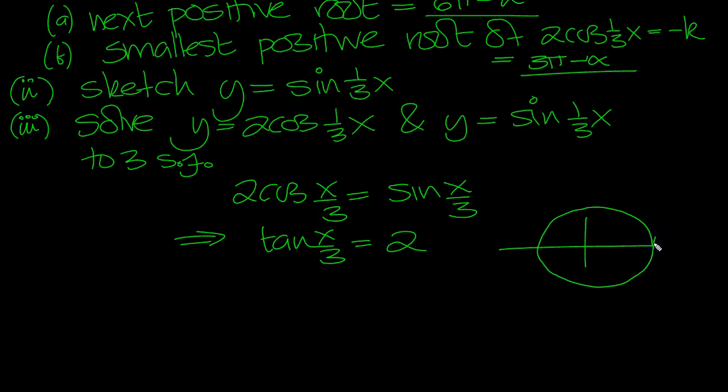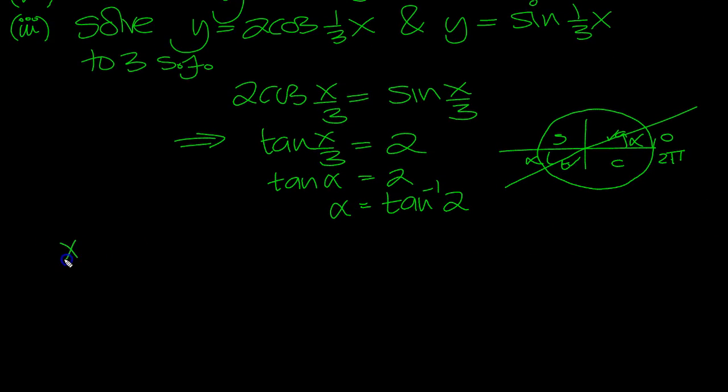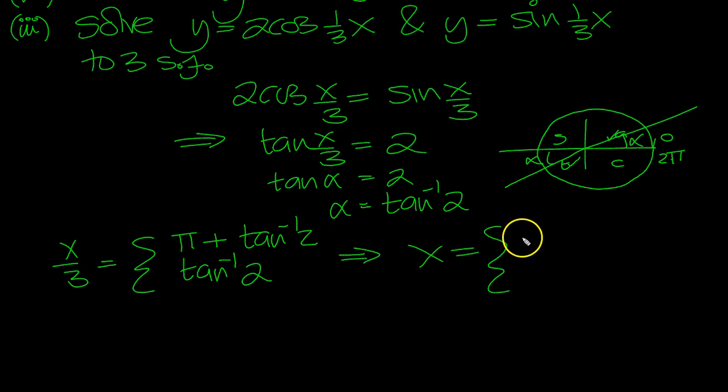We're looking for solutions for x between 0 and 2π. So x over 3, generally speaking, and then tan is positive. C, A, S, T. Here and here. So draw two lines, mark off alpha. So tan alpha then is equal to 2. Alpha is equal to shift tan 2. So x over 3 then will equal π plus tan to the minus 1 of 2, and it will be just tan to the minus 1 of 2. So that tells us what x is. It will be 3π plus tan to the minus 1 of 2 and 3 lots of tan to the minus 1 of 2.